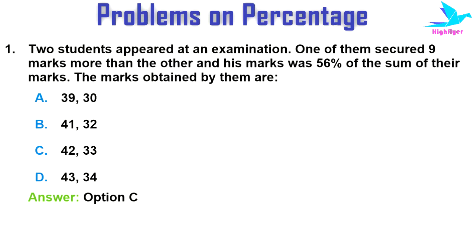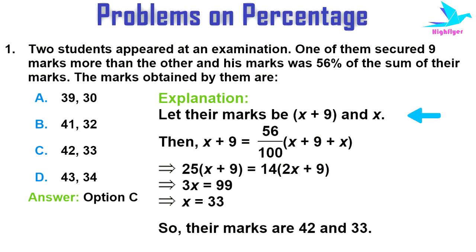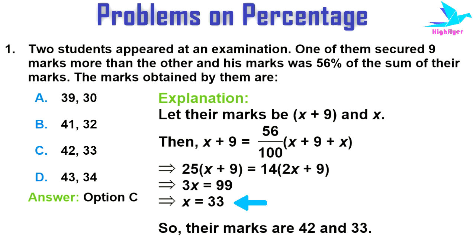Let's see how. As it is given that one secures 9 marks more than the other, let the marks be (x + 9) and x. Then x + 9 equals 56 by 100 into (x + 9 + x), because x + 9 will be 56 percent of both of their marks. Solving this equation, we get x equals 33, and x + 9 will be 33 + 9, that is equal to 42. So the marks are 42 and 33.